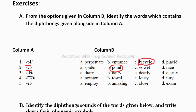The third diphthong is the I and inverted E symbol, which gives the sound /ɪə/ like 'ear'. The options here are diary, dairy, dearly, and clarity. We don't have 'clear' — if we had 'clear' we could choose that, but from these options 'dearly' contains the /ɪə/ sound.